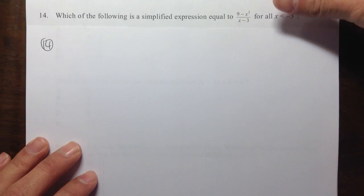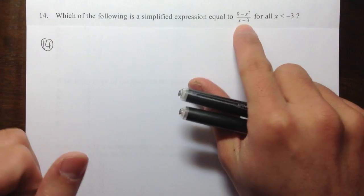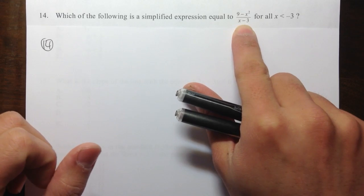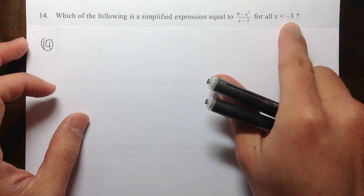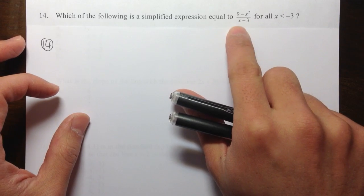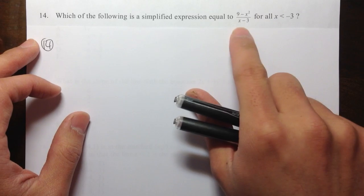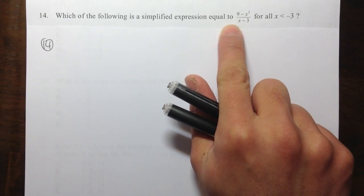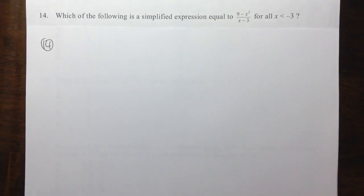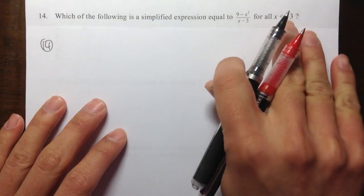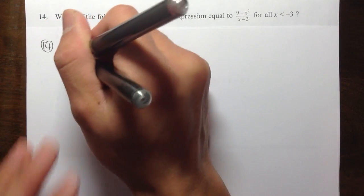Don't let this bother you too much. Whenever they say something like this, they just want to make sure that this is a legit question. If x is less than negative 3, then that will make sure that the denominator is not equal to 0. Don't let that bother you too much. Let's just do the simplification.